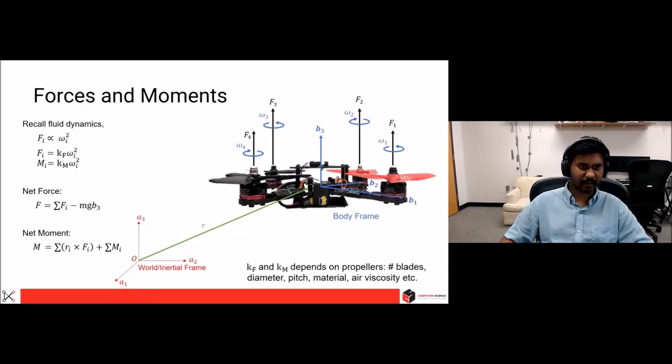So recall from fluid dynamics that the force is directly proportional to the angular velocity squared. Here we put I because I refers to each of the motors as shown in the figure. And moments generated by a propeller is in the negative direction of the angular velocity of the propeller.